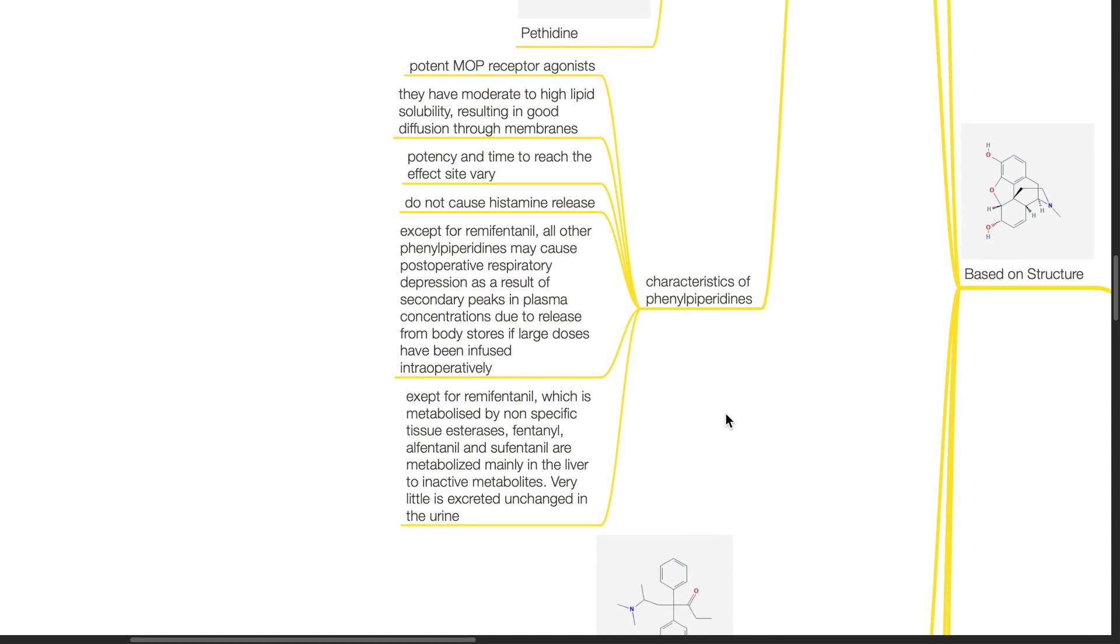Except for remifentanil which is metabolized by non-specific tissue and plasma esterases, fentanyl, alfentanil and sufentanil are metabolized mainly in the liver to inactive metabolites. Very little is excreted unchanged in the urine.